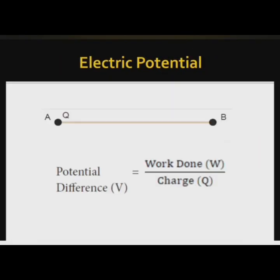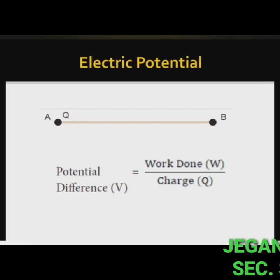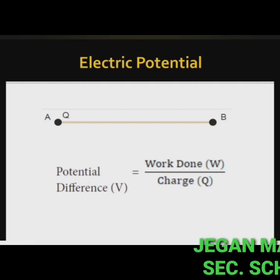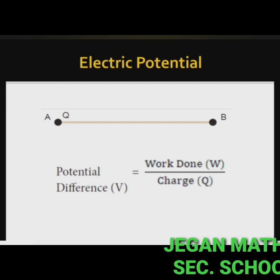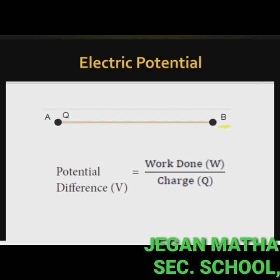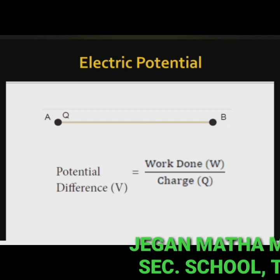Next, electric potential. You are familiar with water current and air current. Just as there must be a difference in temperature between two points in a solid for heat to flow, similarly, a difference in electric potential is needed for the flow of electric charges in a conductor. The charges will flow from a point at higher electric potential to a point at lower electric potential. Electric potential at a point is defined as the amount of work done in moving a unit positive charge from infinity to that point against the electric force.